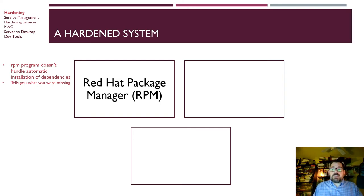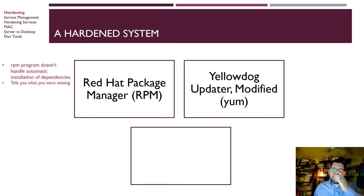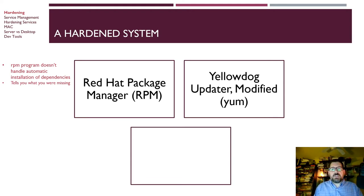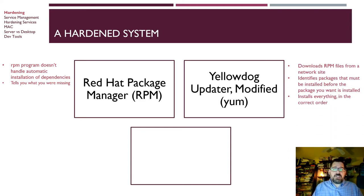Traditionally RPM is a great package manager that's been around a long time, but it doesn't do everything you need. So then you get things like the Yellow Dog Updater Modified, which is YUM. In the Debian world it's apt-get. In this course we've been using YUM with RPM. YUM downloads those RPM package files and runs them, but it also tracks all the dependencies and knows how to find and install those automatically.